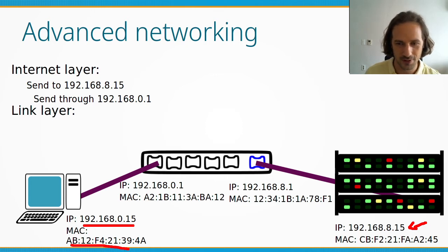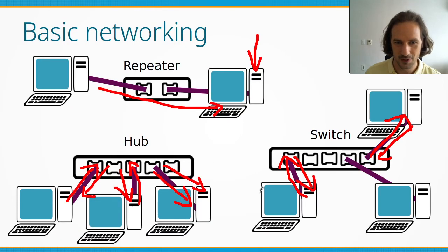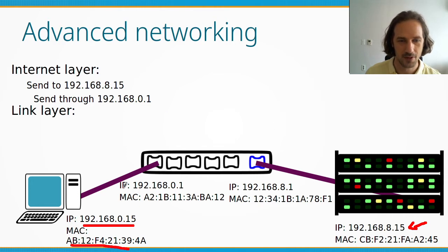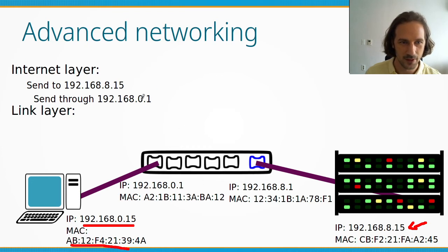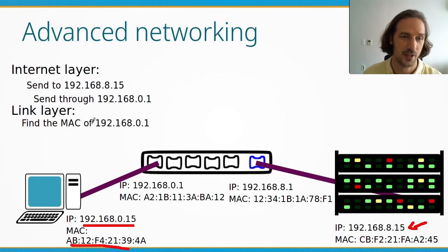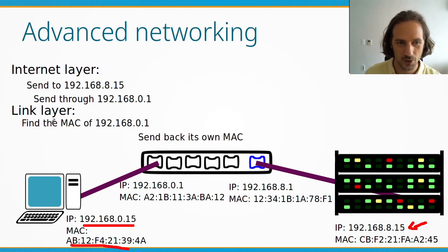We realize we are on a different network, so this is a more complicated situation involving a router. We cannot address this computer directly — it's in a different network. But we have a default gateway, which is the router. The router has an IP address in both networks, and both interfaces have different MAC addresses. Our computer realizes it cannot directly send a message to this IP address and needs to go through the gateway. The link layer needs a MAC address, but since we just turned the computer on we don't know what the router's MAC address is.